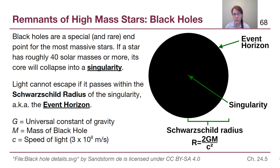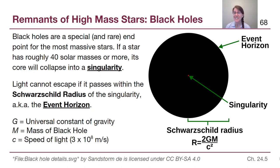Their structure is one that we're only going to touch on two aspects of, because a lot of the details of what black holes look like or are structured like are well beyond the scope of our curriculum — beyond, in fact, most astronomers or physicists to fully understand. The two key aspects are the singularity, which is where all of the mass is located and it's infinitely small, which means the density of that location is kind of infinity — any number over zero means the density is incalculable.